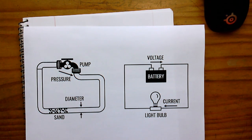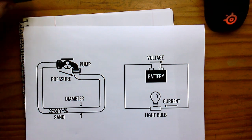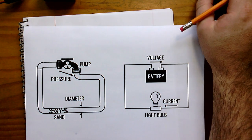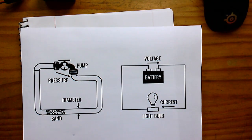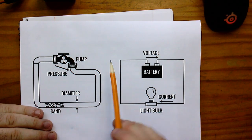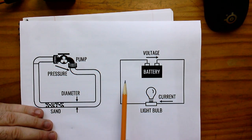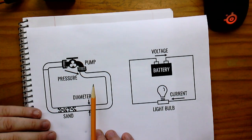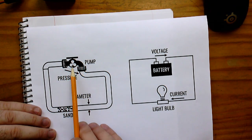Now, how do we measure current and why do we even want to measure current in a DC motor? Before we ask why, let's talk about what current is. Your electrical instructor will do a better job of this than I will, but they will probably use something like a water analogy to explain the difference between voltage and current.